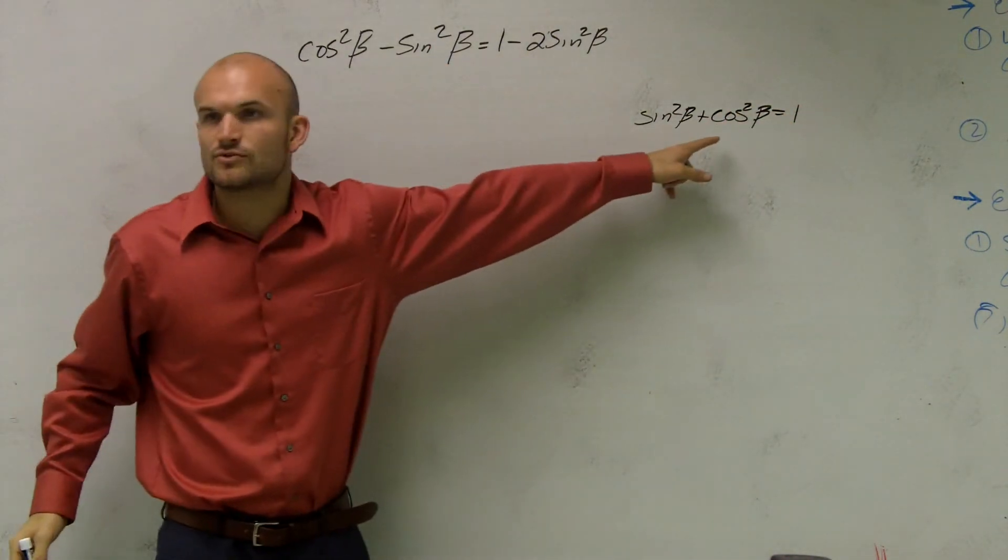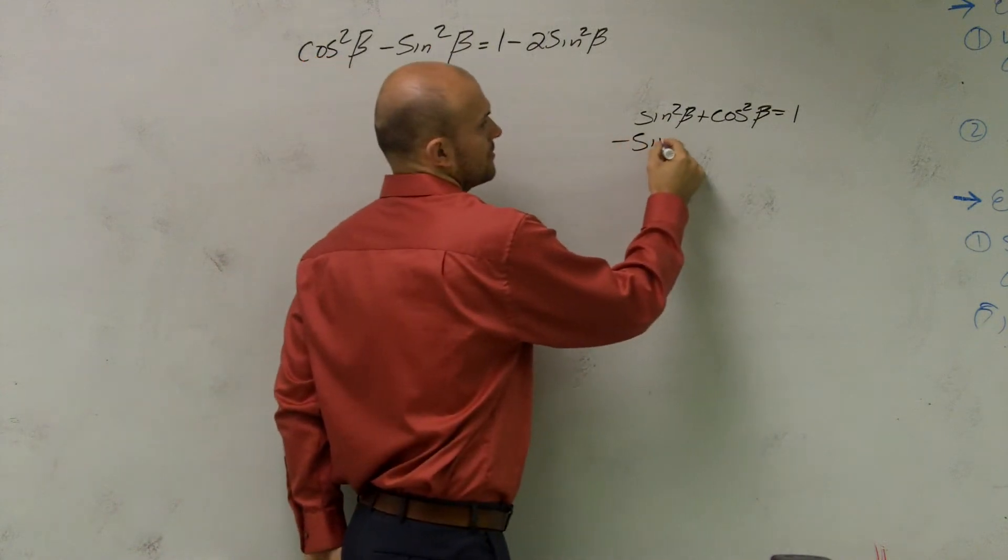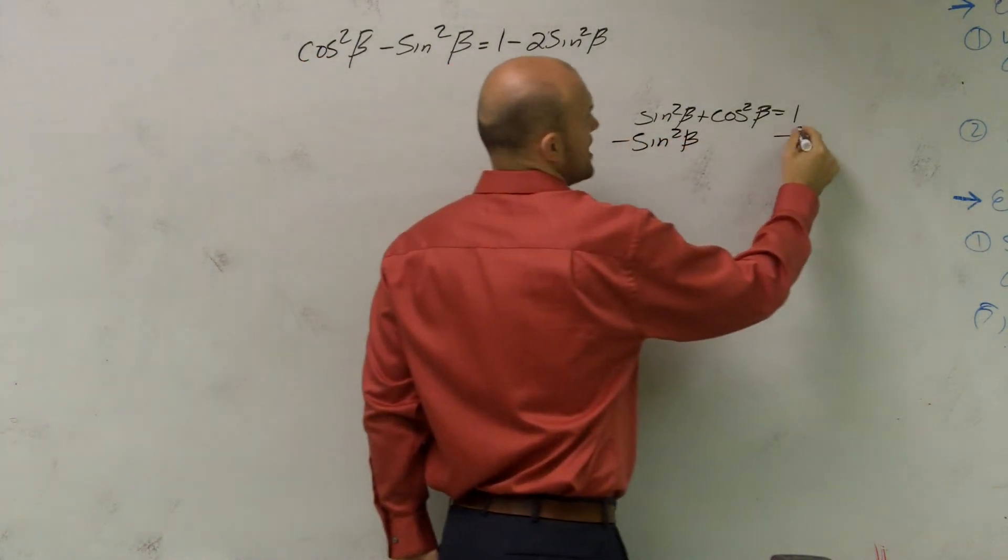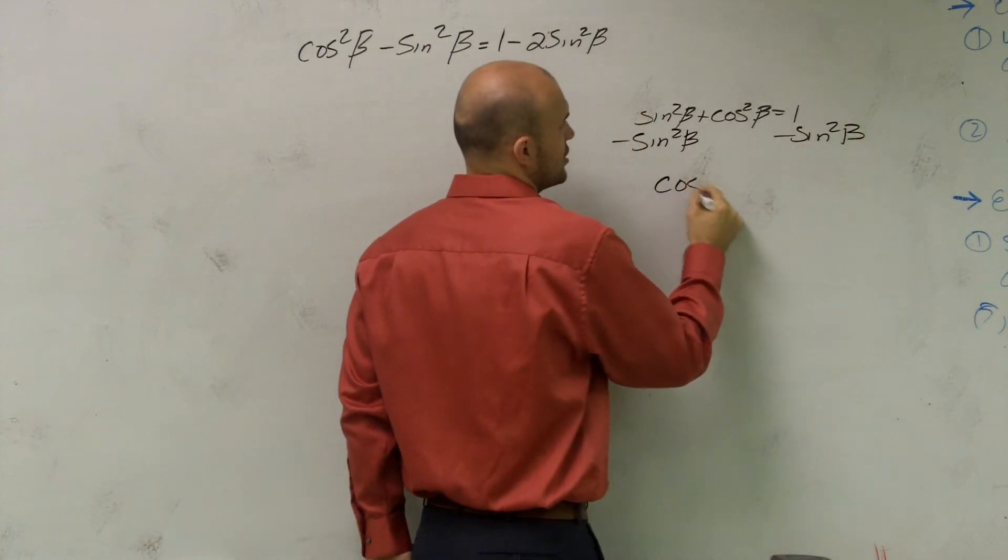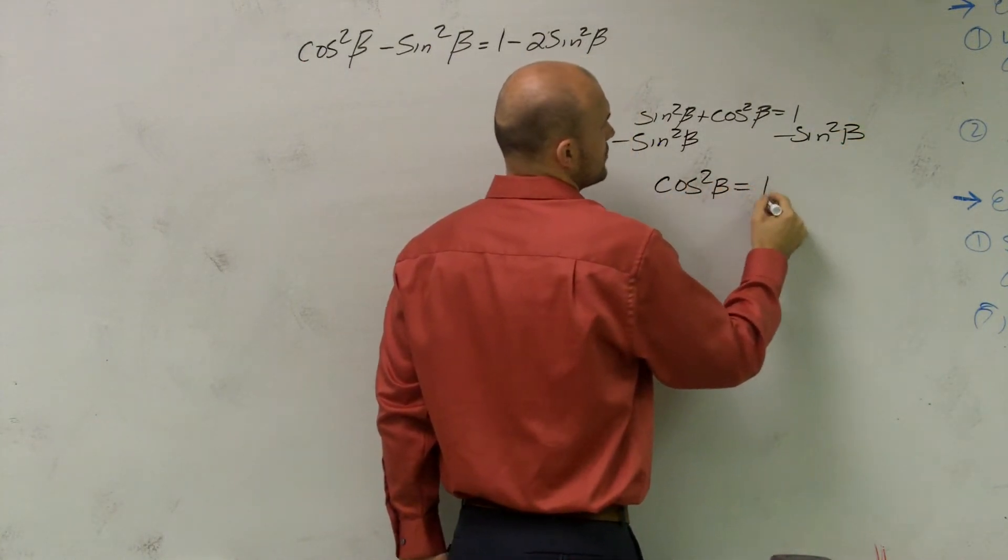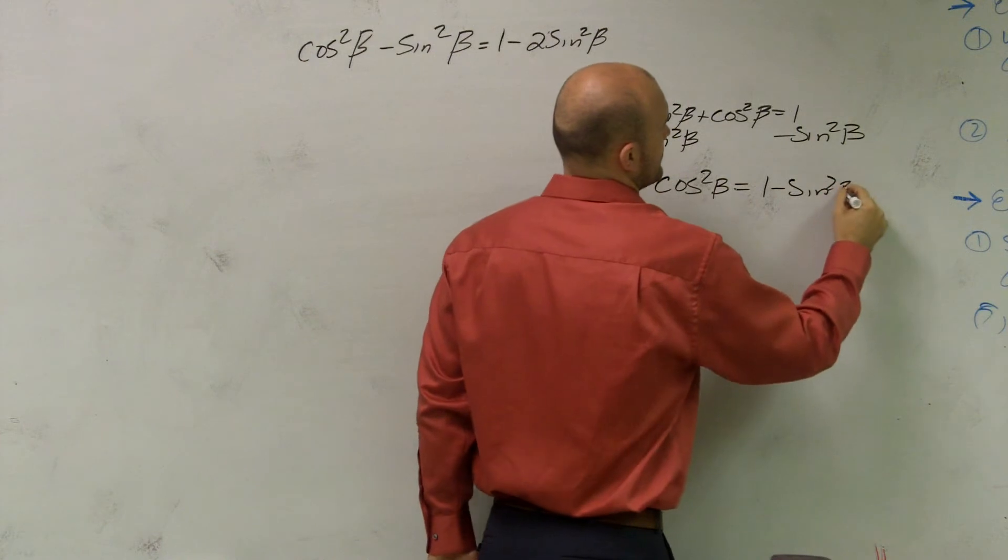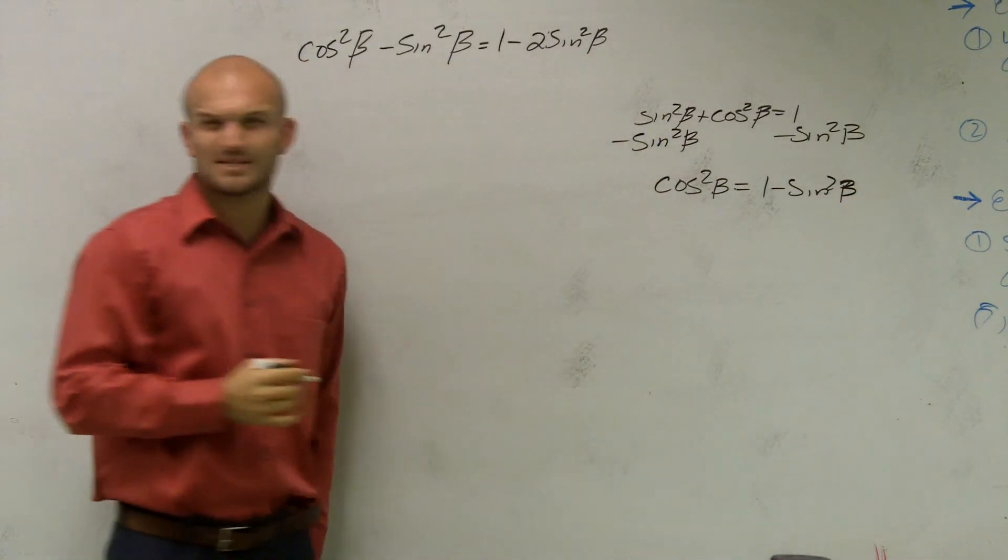So what does just cosine squared of beta equal? Well, let's subtract the sine squared of beta. So I can say cosine squared of beta equals 1 minus sine squared beta. Does that make sense?